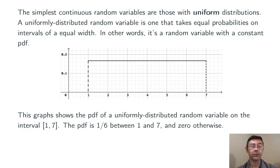Now, this total area has to be 1. Since I have a width of 6, the height has to be 1 sixth. Knowing the height of this rectangle lets me compute probabilities for any range of x.